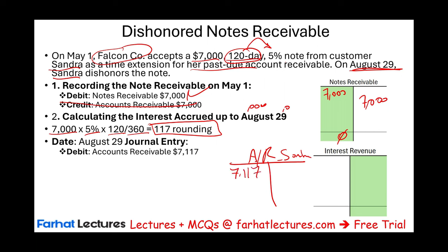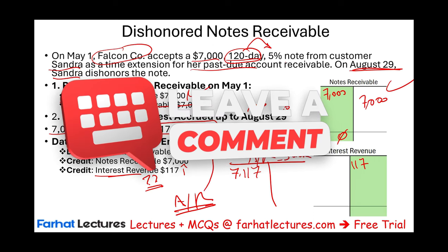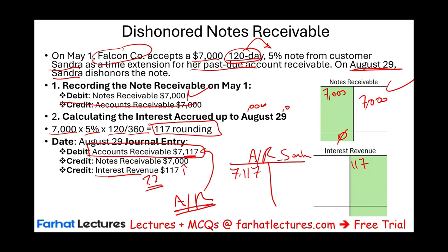Since Sandra never paid, we debit Accounts Receivable for Sandra for $7,117 — telling her she owes $7,117 — and credit Notes Receivable for $7,000 and credit Interest Revenue for $117. We recognize the interest revenue because we earned it by waiting and accruing interest. If Sandra still doesn't pay, we apply the allowance method for doubtful accounts, just as we learned with regular Accounts Receivable.